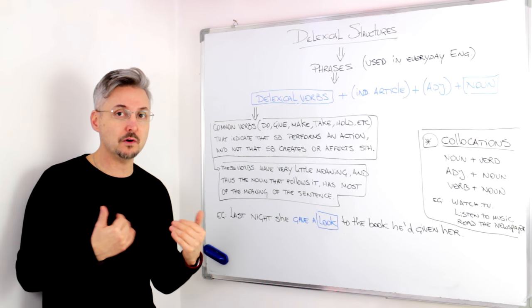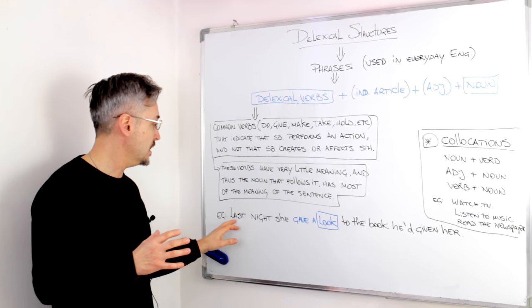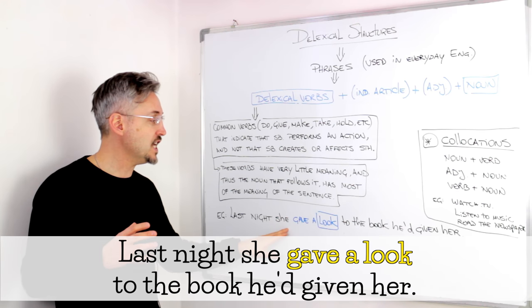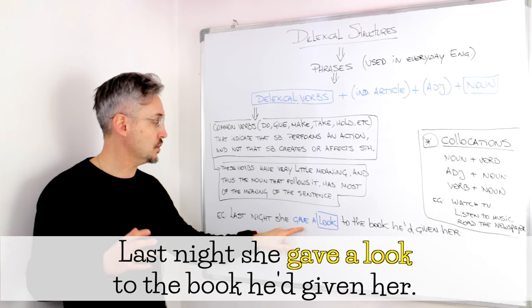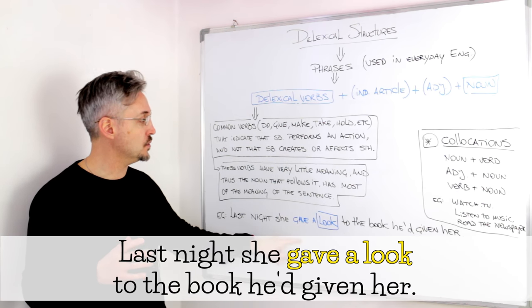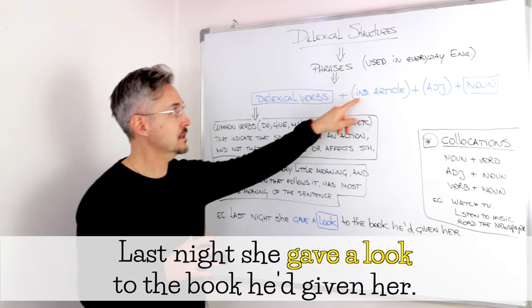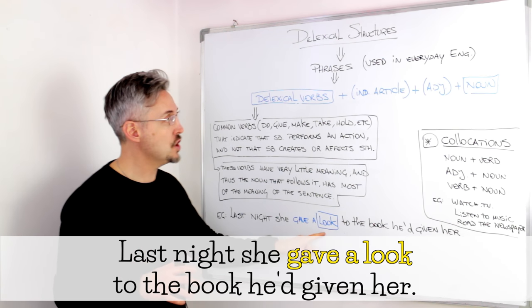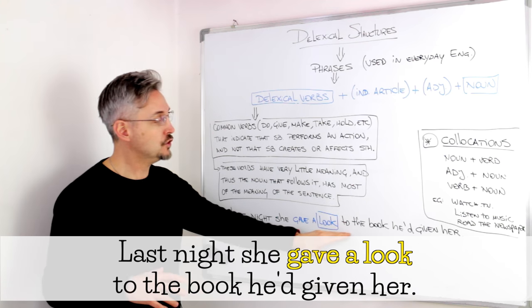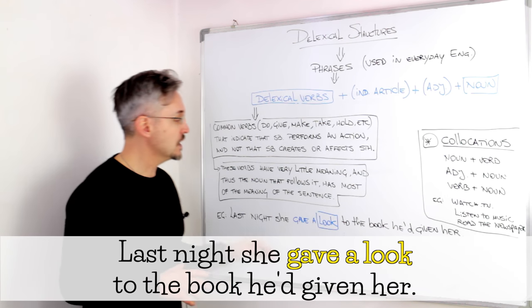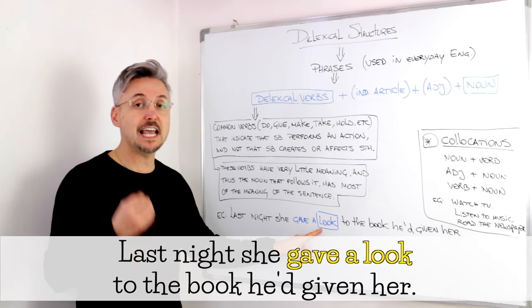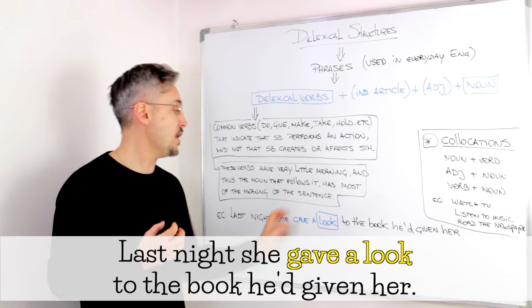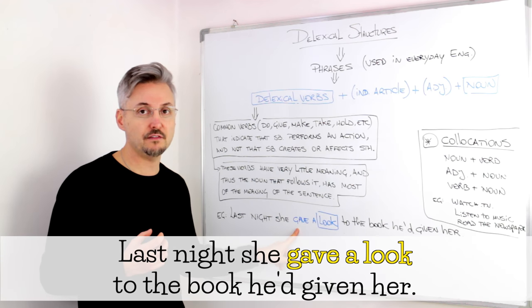Let's look at my example, just to make it clearer. Last night, she gave a look, so gave is the lexical verb to give, a is the indefinite article, look is the noun, to the book he'd given her. So here, look takes most of the meaning of the whole sentence, and not give.